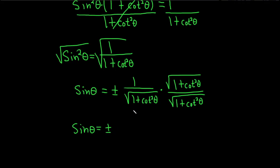± √(1 + cot²θ) on top. On the bottom, the square root times the square root will cancel, so it's just 1 + cot²θ.